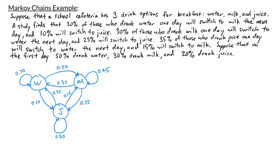It says that on the first day, 50% of students drank water, 30% drank milk, and 20% drank juice. Part A says to construct a stochastic matrix P. In our previous example, we constructed the matrix by coming up with a system of equations and transforming it into a matrix equation, but there is a faster way to construct our stochastic matrix.